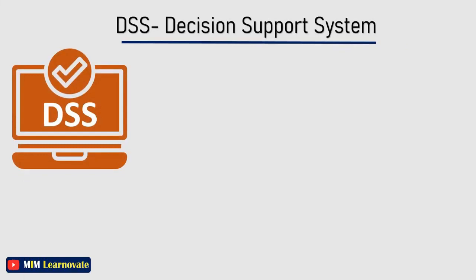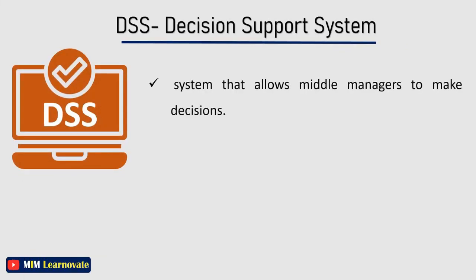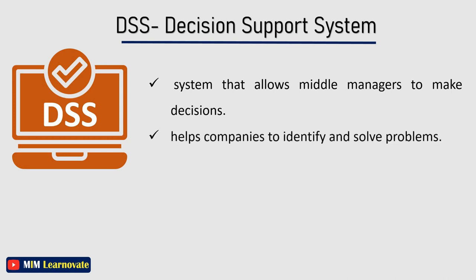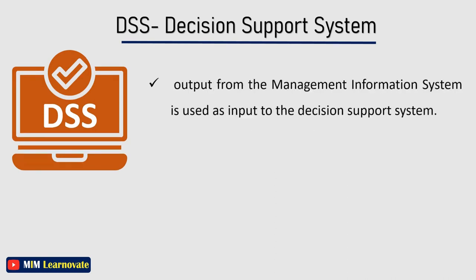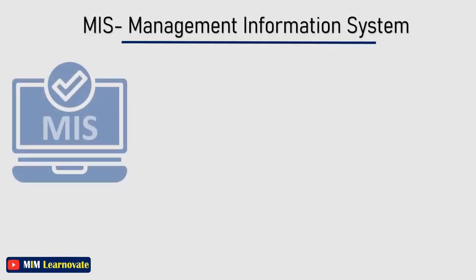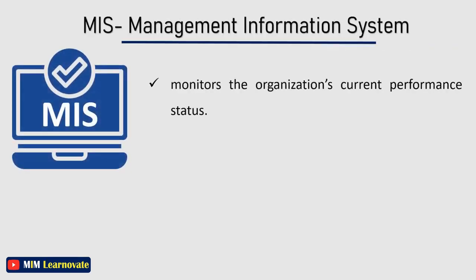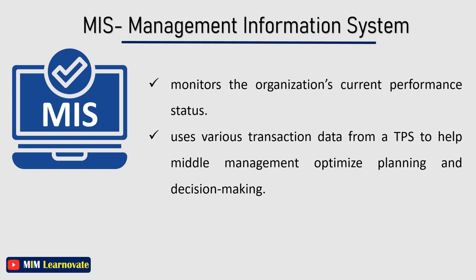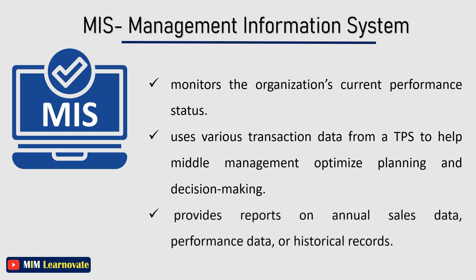Decision Support System is a system that allows middle managers to make decisions. It helps companies identify and solve problems. The output from the Management Information System is used as input to the Decision Support System. Decision Support Systems also get data input from external sources such as current market forces and competition. MIS monitors the organization's current performance status, using transaction data from a TPS to help middle management optimize planning and decision making. It provides reports on annual sales data, performance data, or historical records.